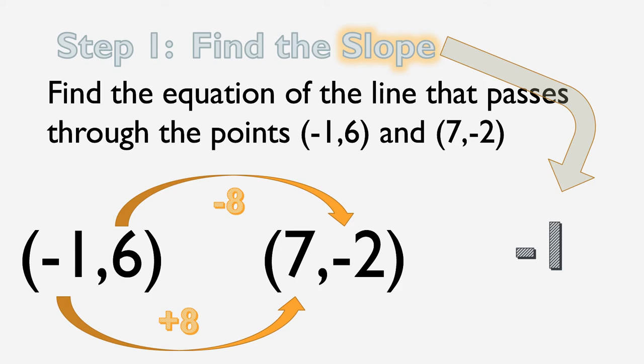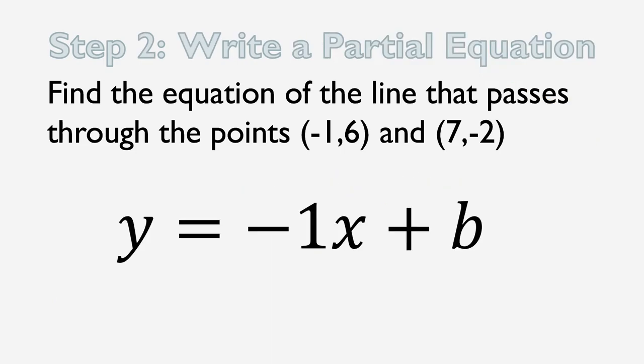And now we're going to plug negative 1 into the m-slot and write a partial equation. y equals negative 1x plus b.